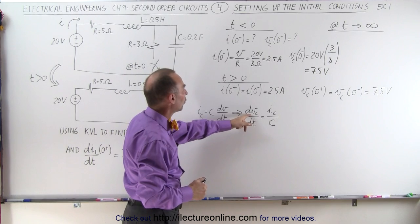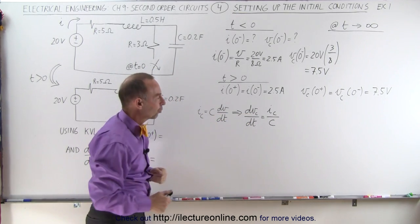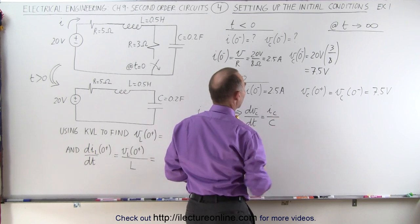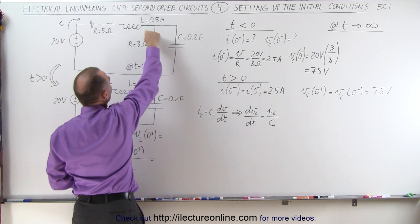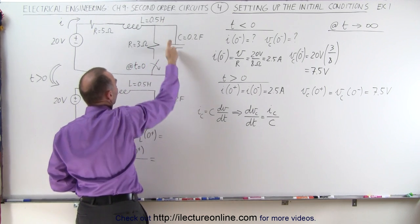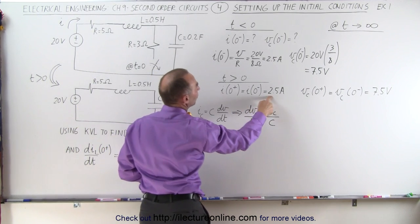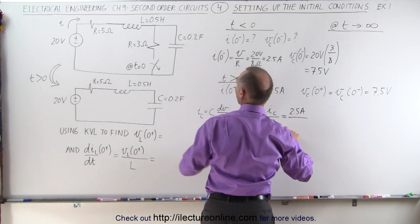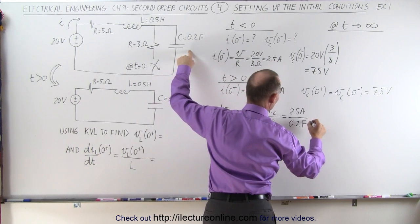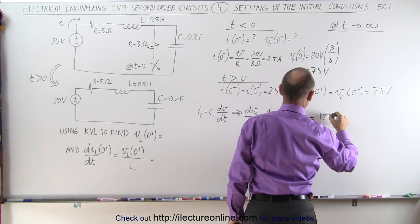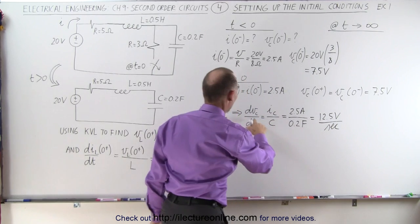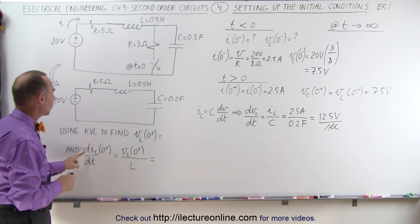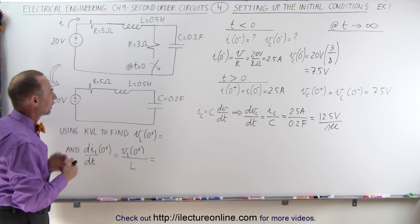Next we want to find the rate of change of the voltage across the capacitor with respect to time, right after the switch opens. It's defined as the current through the capacitor divided by the capacitance. Once we open the switch, there's no longer current flow through that resistor — all the current has to flow through the capacitor. The current right after the switch opens equals 2.5 amps divided by the capacitance of 0.2 Farads, which gives 12.5 volts per second.